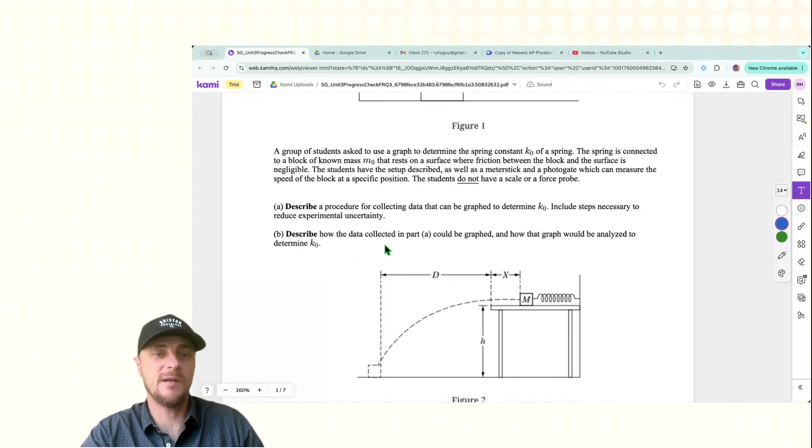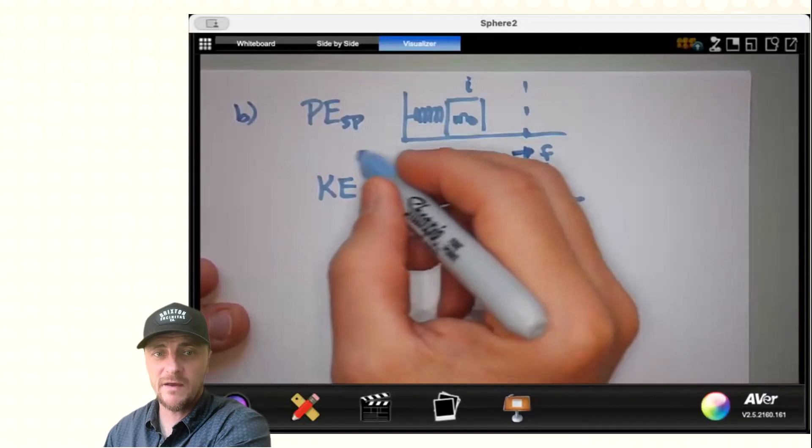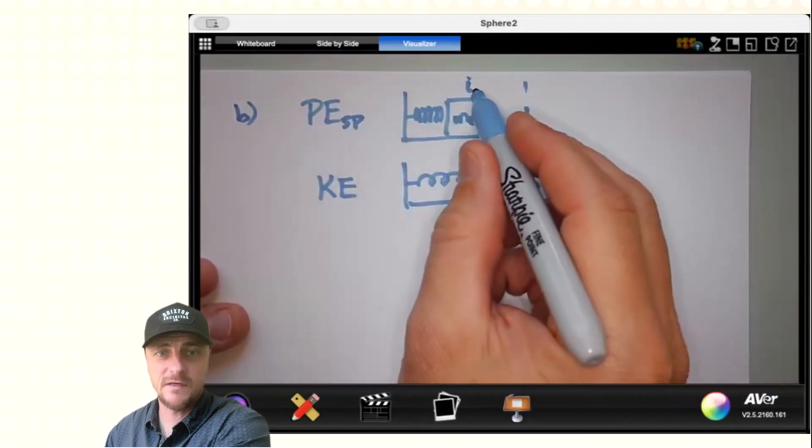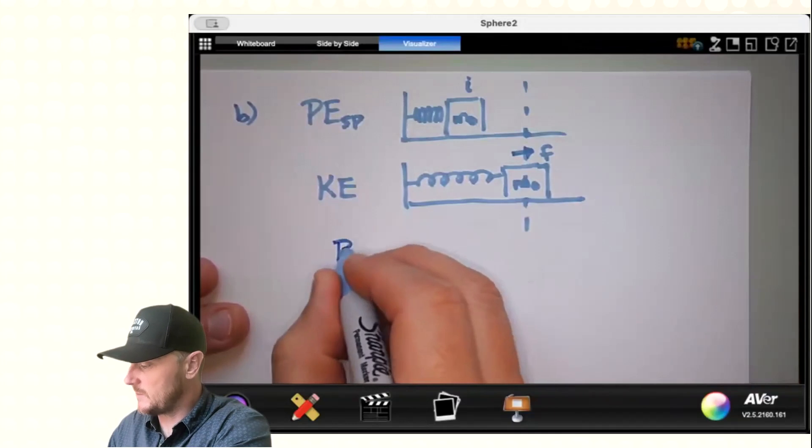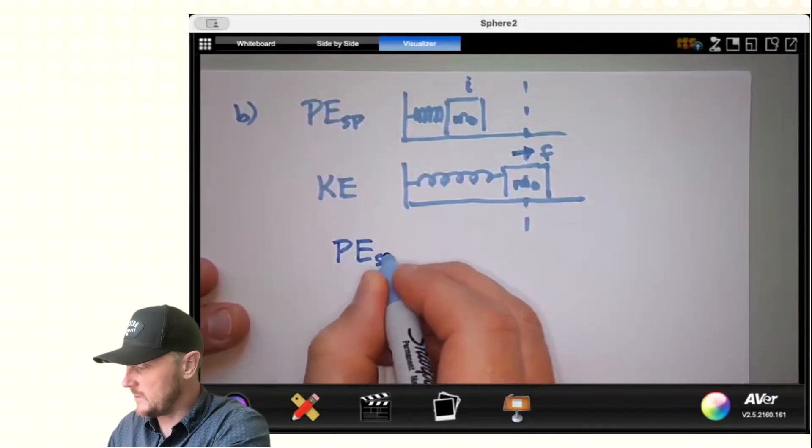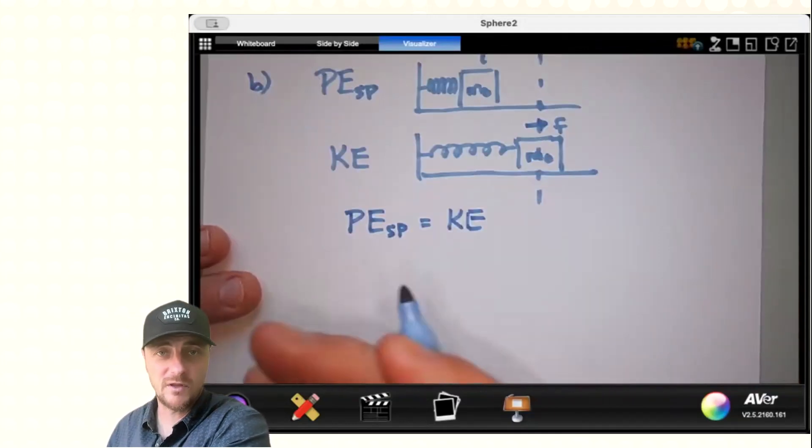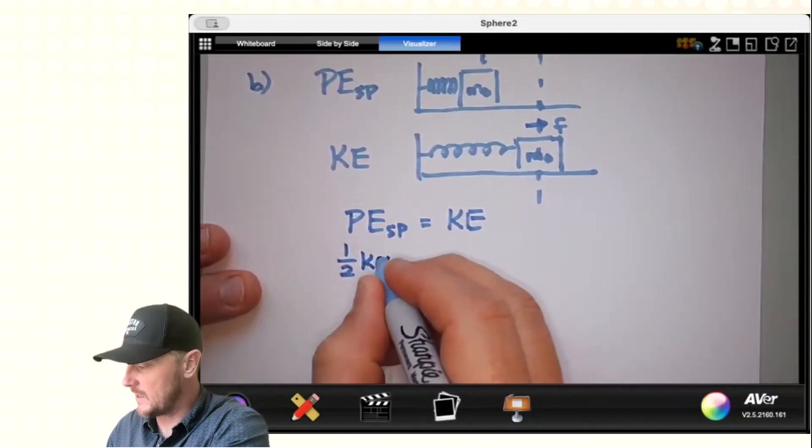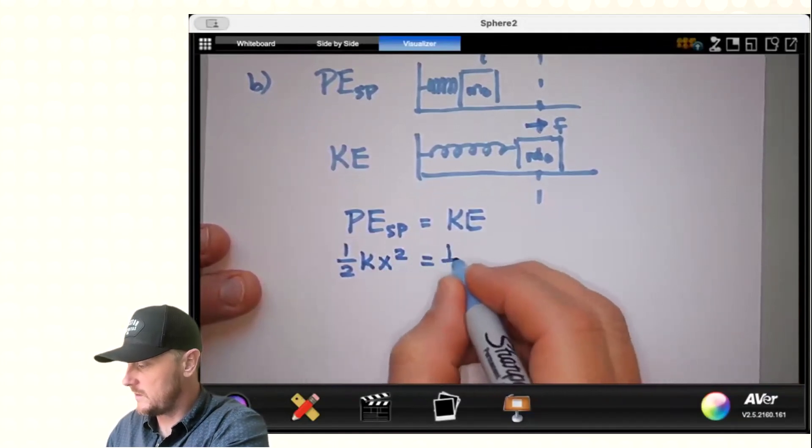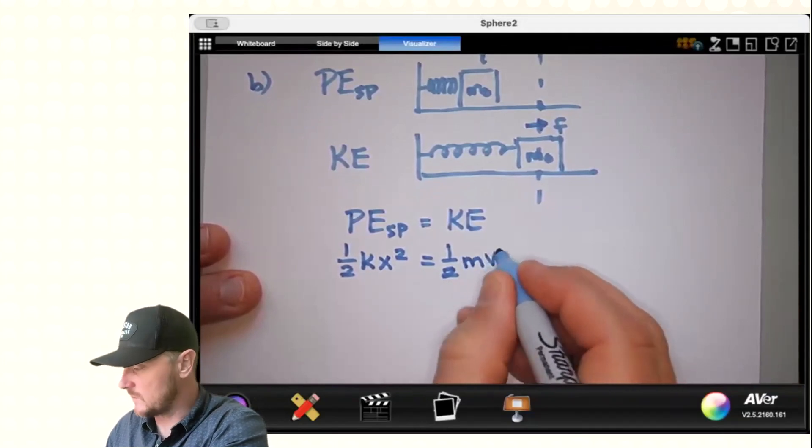So in Part B, you determine how the data collected in Part A could be graphed, and how that graph would be analyzed to determine K0. So once again, here we have elastic potential energy at the initial position, and here we have nothing but kinetic energy. So I would say PE_sp equals KE. I would plug in the correct expressions for each of these. 1 half KX squared equals 1 half MV squared.